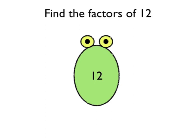Then say to yourself, what two numbers can I times together to make 12? Well, we could do 1 times 12, couldn't we? So put a 1 and a 12 as feet for the factor bug, like you can see here.